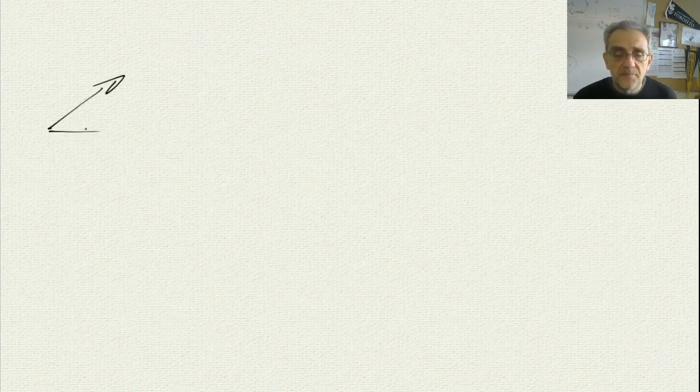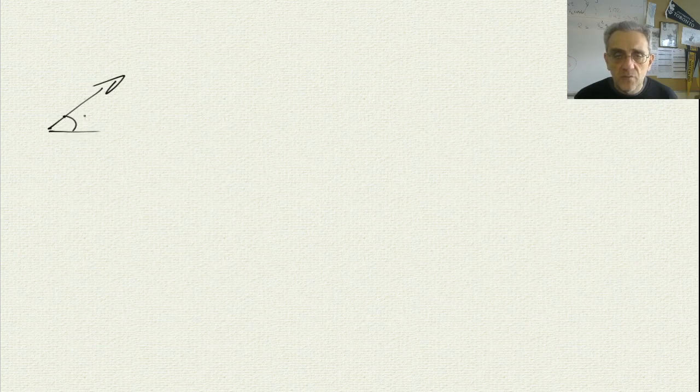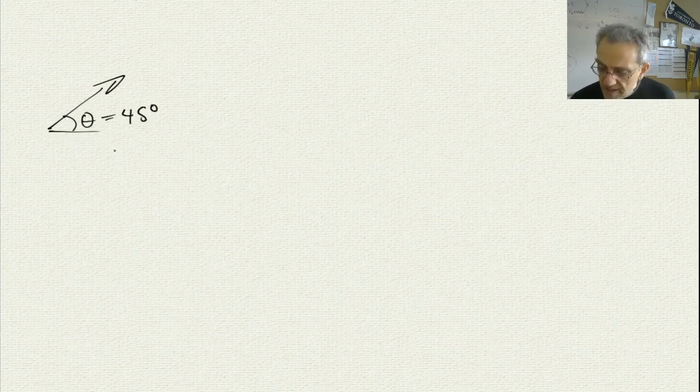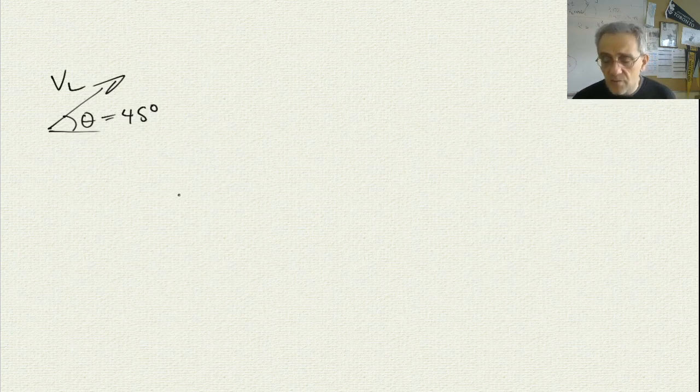Okay, so the next question states that a ball is hit at a 45 degrees angle and travels 98 meters away. The question is, what was the original velocity of the ball? So, what we have, let's write down what we've got here. We've got the situation where a ball is launched like that, where our theta is equal to 45 degrees.